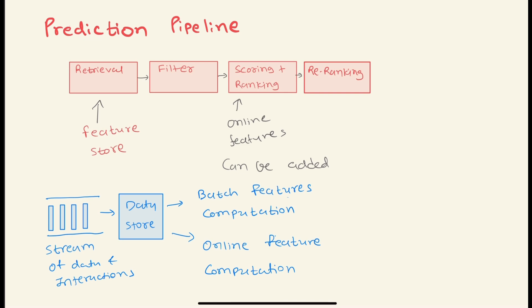This is how the first stage looks. In retrieval we can get the features from feature store, and then at the time of scoring we may add some few extra features which are online features. This is how our prediction pipeline looks.